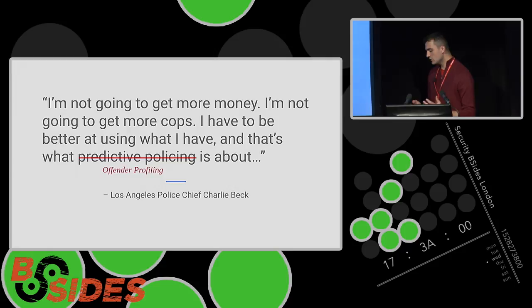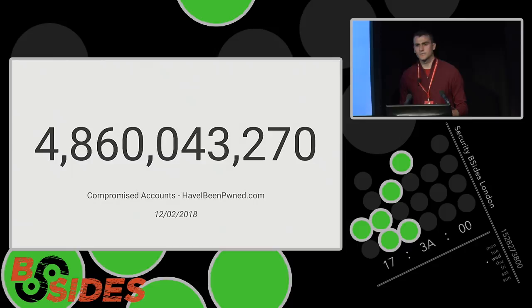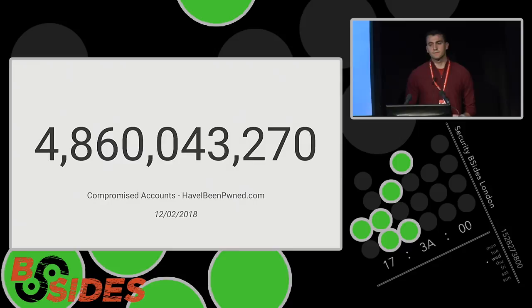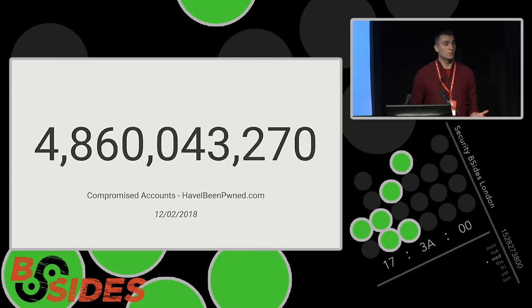That's why offender profiling is important — but why is security important? We wouldn't be here today if we didn't believe security was important. This is a statistic from Have I Been Pwned, a massive online database of breached account credentials where you type your email address in and it tells you if you've been part of a data breach. This is the amount of compromised accounts listed on Have I Been Pwned on the 12th of February 2018. It's a massive number, and it shows us security isn't going anywhere — it's in it for the long haul. As long as we have things, we have things that can be broken, and as long as we have things that can be broken, we have things that need protecting.